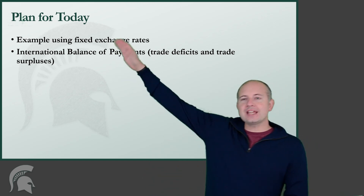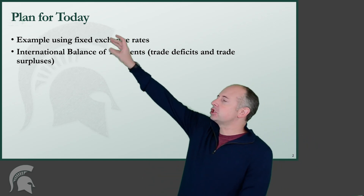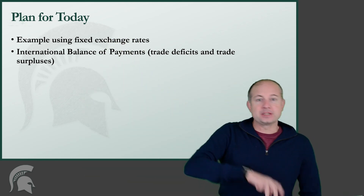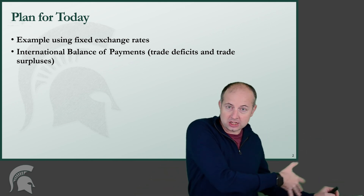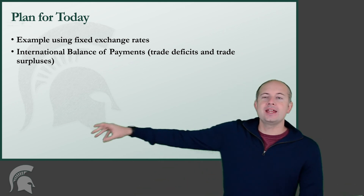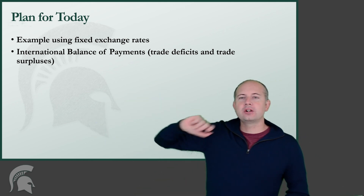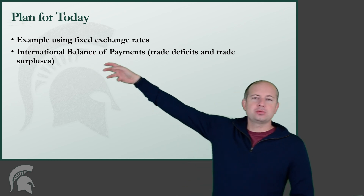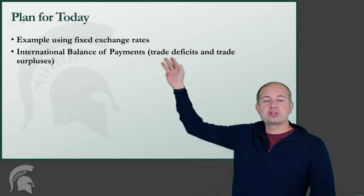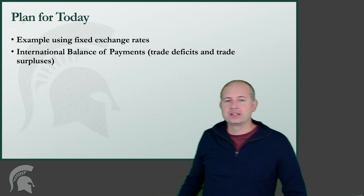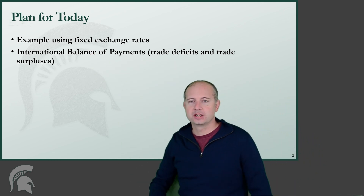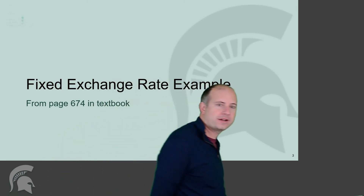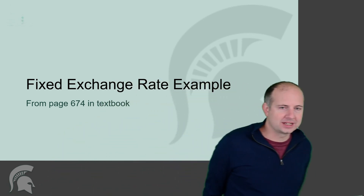We are going to do one example using fixed exchange rates — some of the material we learned last time — and then we're going to learn about international balance of payments, which is what people refer to when they talk about a trade deficit or trade surplus. So first, let's do that fixed exchange rate example.